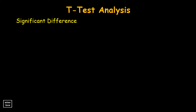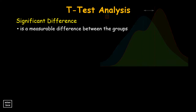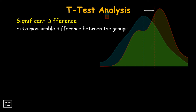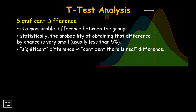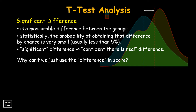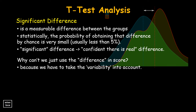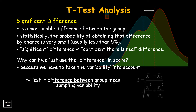A significant difference between two groups or two points in time means that there is a measurable difference between the groups, and that statistically, the probability of obtaining that difference by chance is very small, usually less than 5%. When a result is identified as being statistically significant, this means you are confident there is a real difference between two variables. We can't just use the difference in score because we have to take the variability into account. The outcome of the t-test formula depends on variability that comes from sampling.